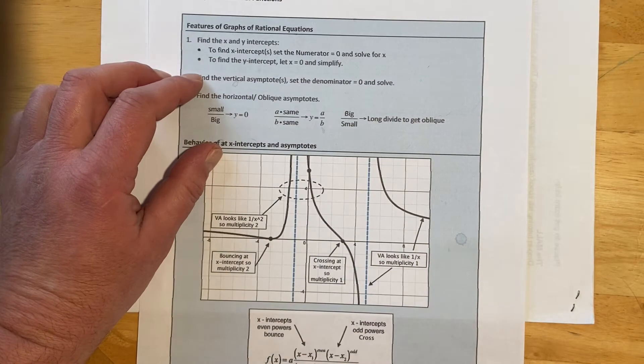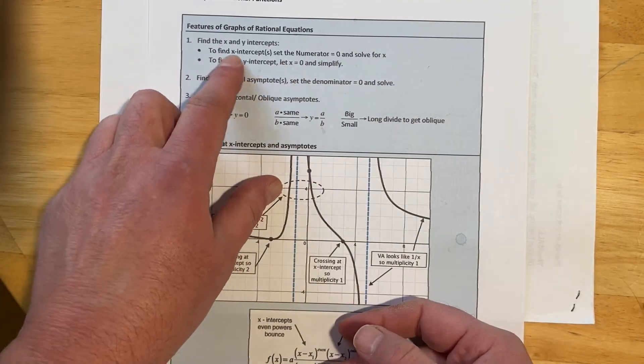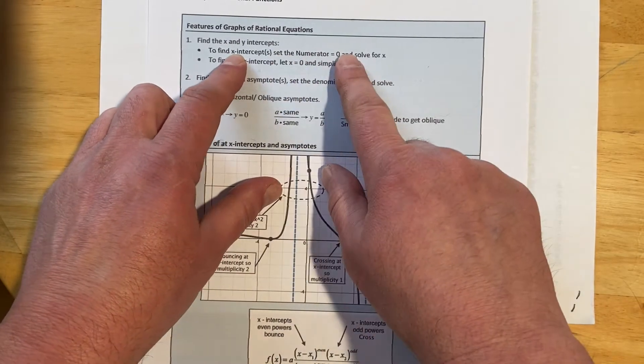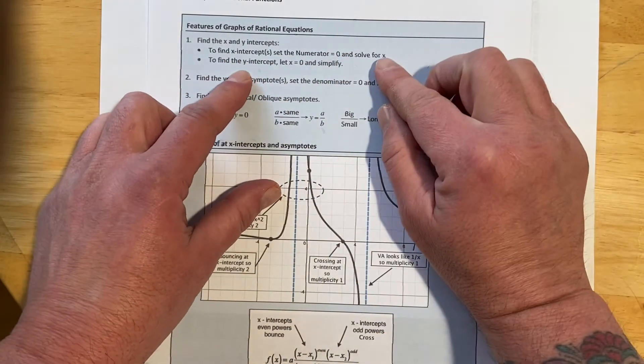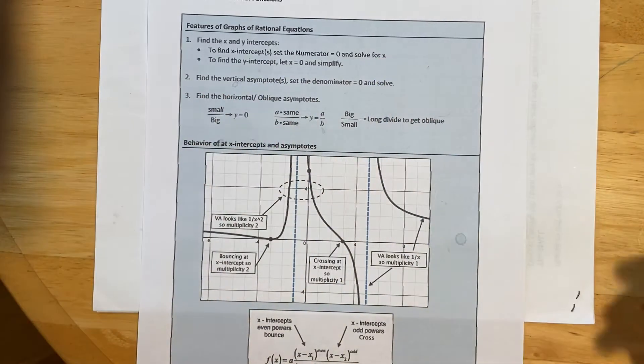So key features of the graph of rational equations: X and Y intercepts. To find X intercepts, we set the numerator to 0 and solve for X. To find the Y intercept, we let X equal 0 and simplify.